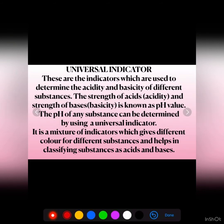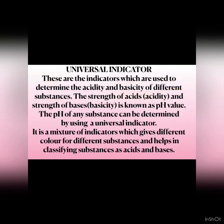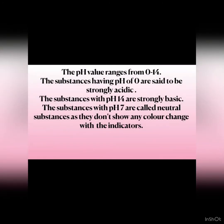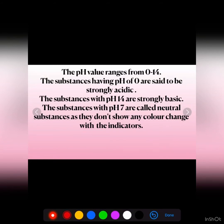Universal indicators are those indicators which are used to determine the acidity and basicity of different substances. The strength of acids and bases is known as pH value, and pH of any substance can be determined using a universal indicator. pH value ranges from 0 to 14. Substances having pH 0 are strongly acidic, pH 14 are strongly basic, and pH 7 are neutral.